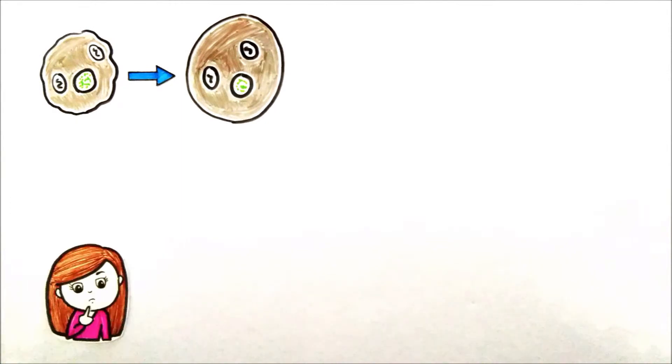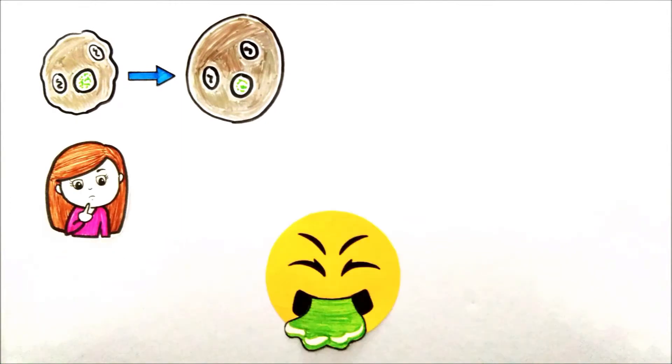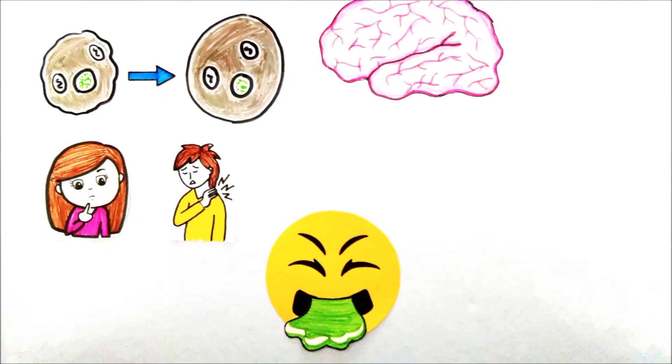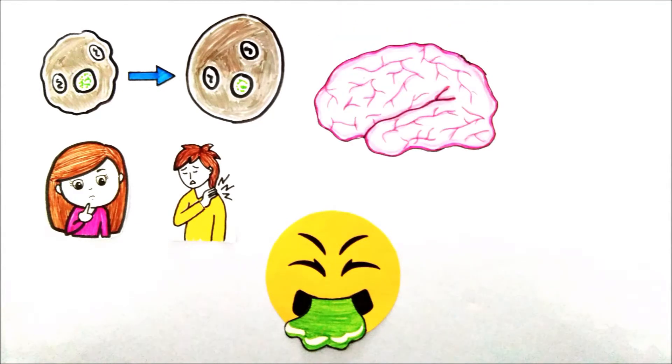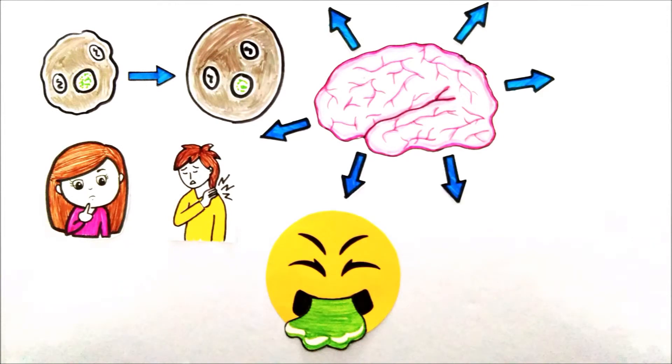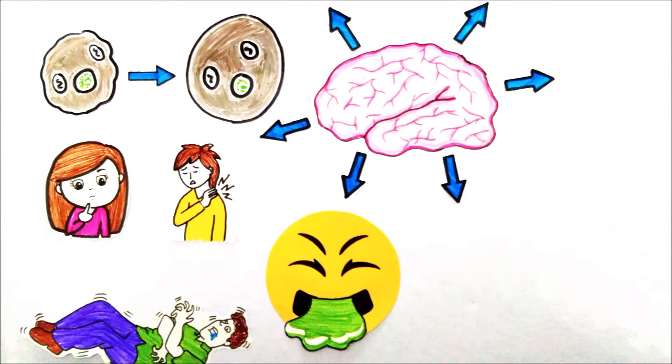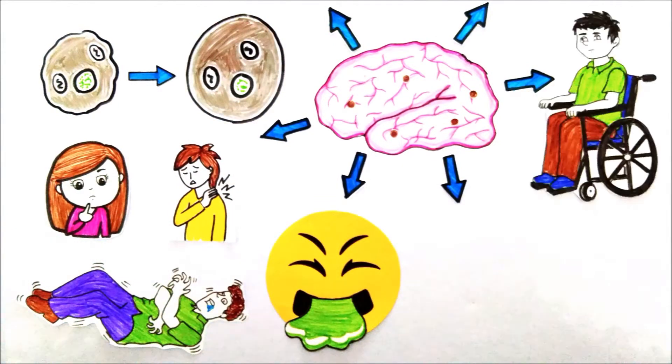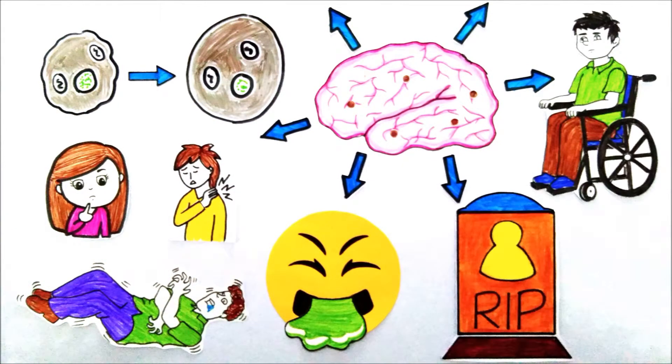This results in complications like confusion, vomiting, and muscle spasms. If you keep drinking more and more water, then the cells in the brain will also start to swell up, which builds up pressure inside your skull. This can lead to seizures, brain damage, paralysis, and in severe cases, death.